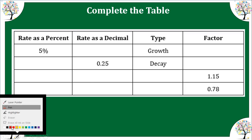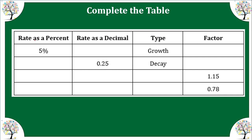Let's review how we change a percent into a decimal. So 5% is the same as 0.05. If this was a growth, I would add 0.05 to 1 and my growth factor would be 1.05. Notice the difference between our rate as a percent and the factor. If we had 0.25 as our rate as a decimal, that means it was 25%. And in this case, they say it's a decay, so we have 1 minus 0.25 and our decay factor is 0.75.